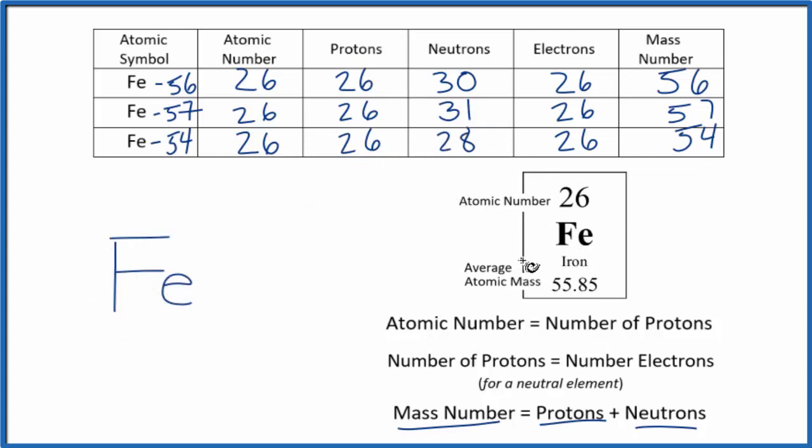But you can look at the periodic table and look at the average atomic mass. That's 55.85. That's an average of these mass numbers for all the isotopes of iron. That's an average.